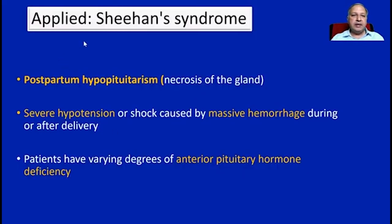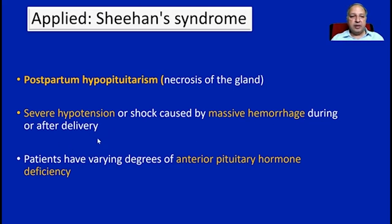Another important condition to remember is Sheehan syndrome, which occurs due to hypopituitarism at the postpartum level, primarily because of necrosis of the gland. Because of absence of normal secretions from the pituitary gland, there will be severe hypertension due to abnormal mineralocorticoid secretion, or shock caused by massive hemorrhage during or after delivery. Patients have varying degrees of anterior pituitary hormone deficiency involving nearly all the hormones.